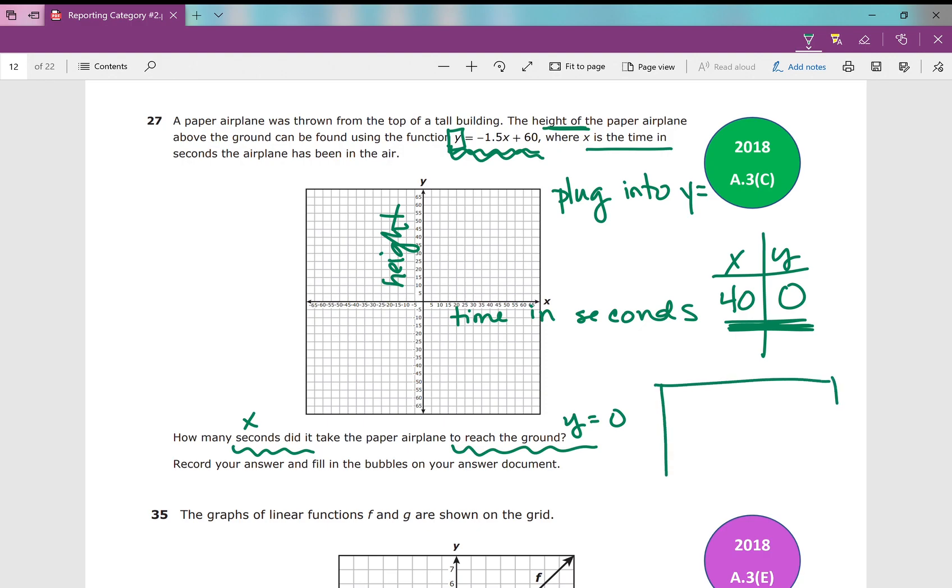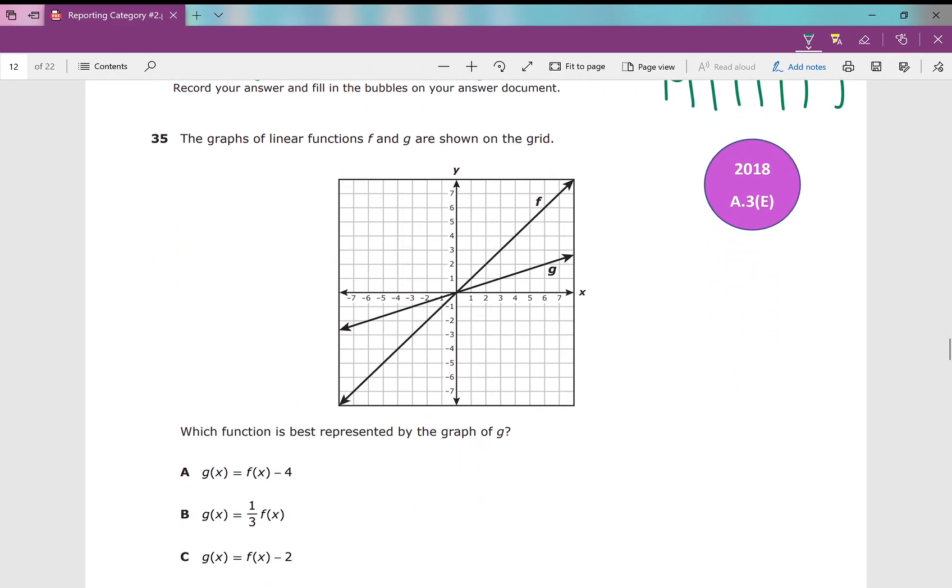What else could you do? Could you plug in zero for y and solve? Sure. Zero right there for y, and then solve for x, and you'll still get 40. So this is a griddable. It's going to look like this. There's your plus, there's your minus, and you're just going to put 40 just like that. Moving on to number 35.